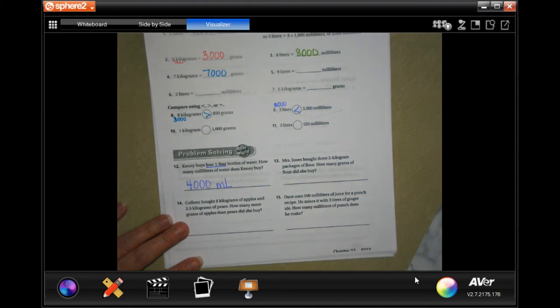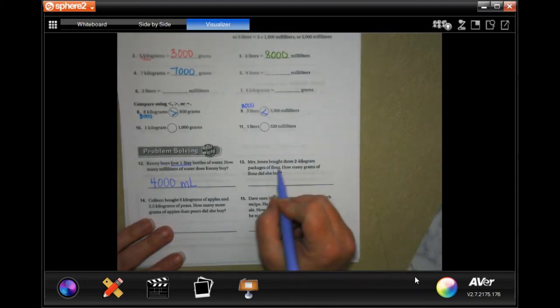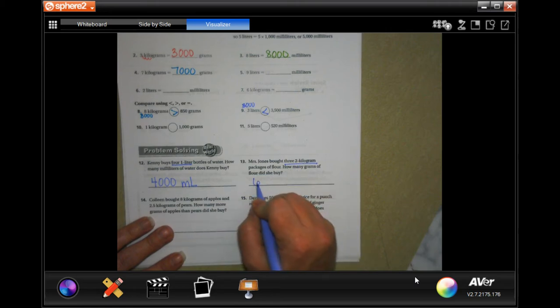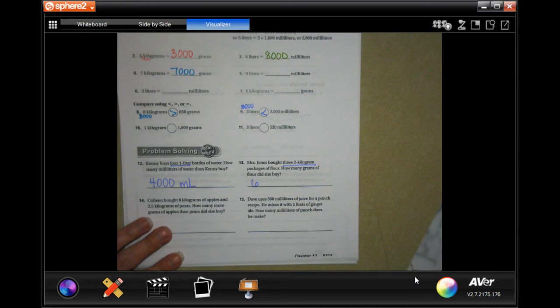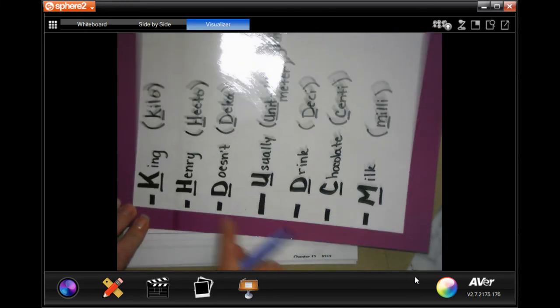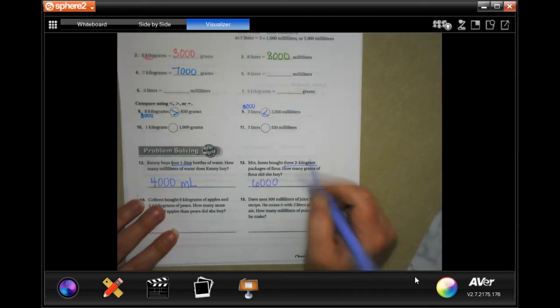Mrs. Jones bought three two-kilogram packages of flour. How many grams is that? Well, she bought three of them and they're each two - that's going to be six. But now we need to go from kilogram to gram. Kilo to gram, one, two, three, one, two, three, and it's going to be in grams.